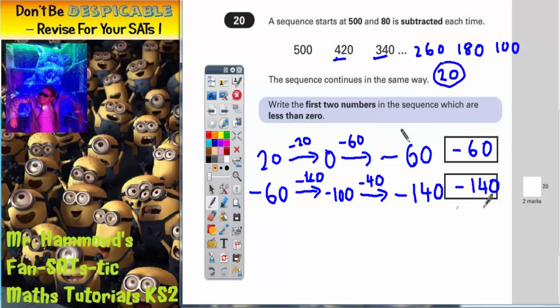Negative 60, negative 140. They're the first two numbers in the sequence, which are less than zero.